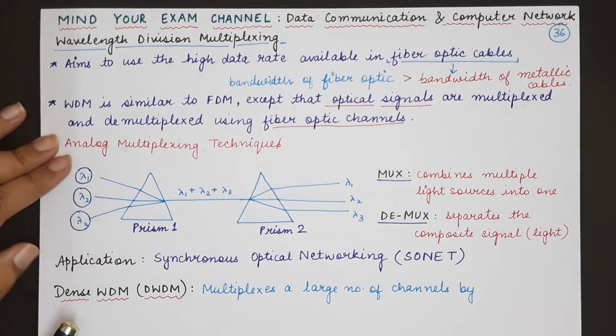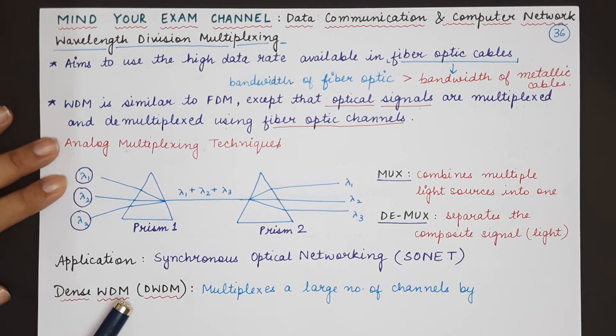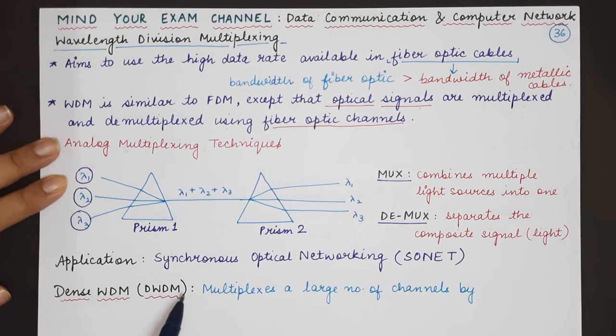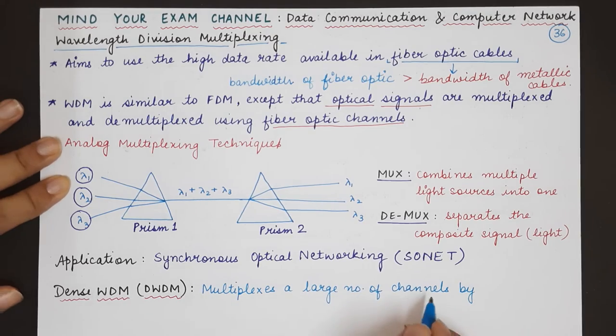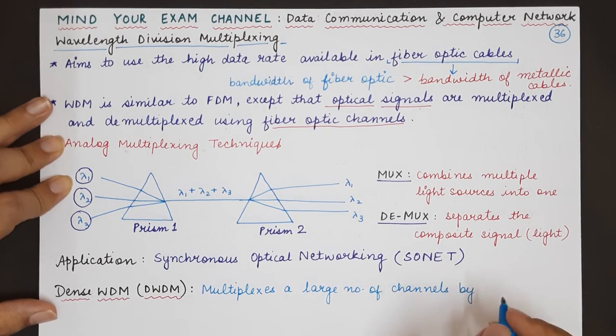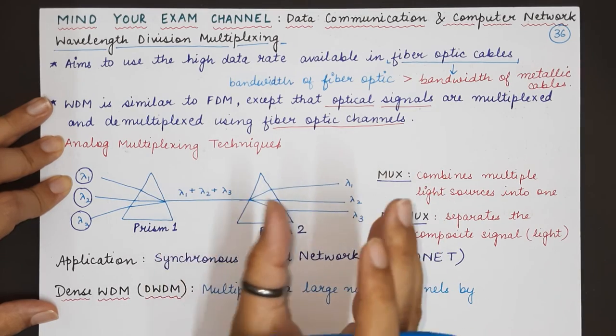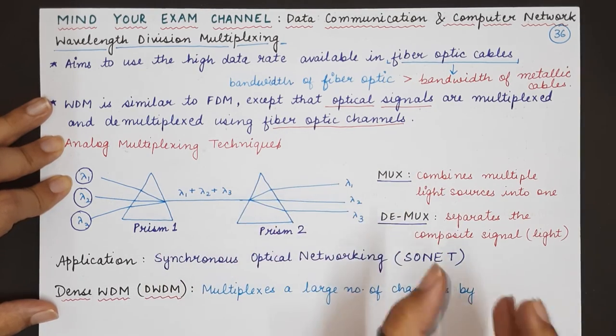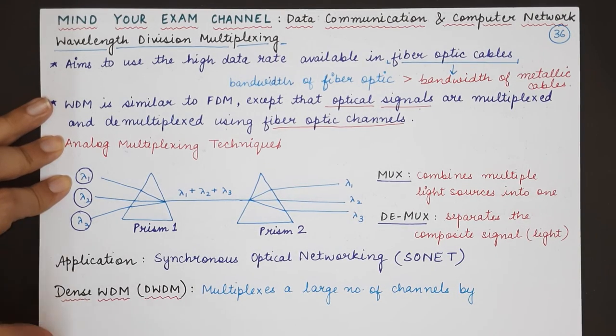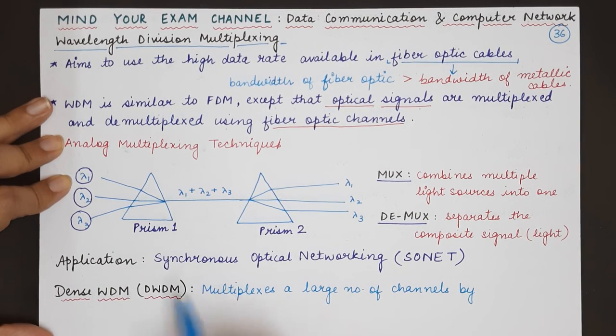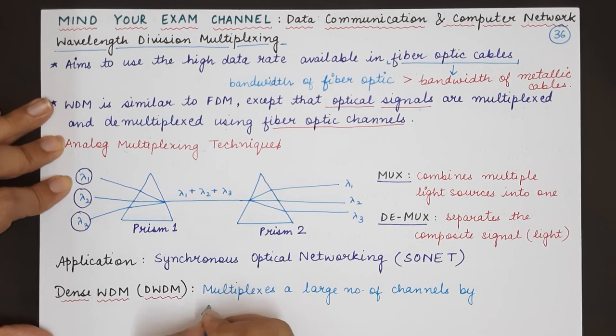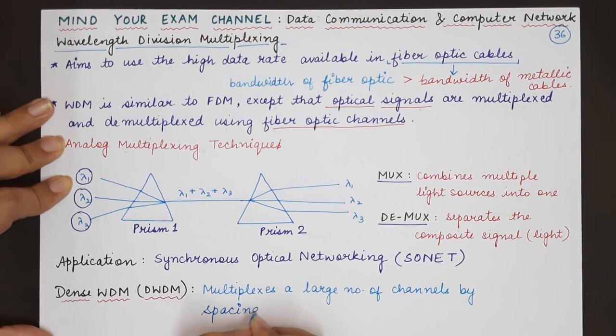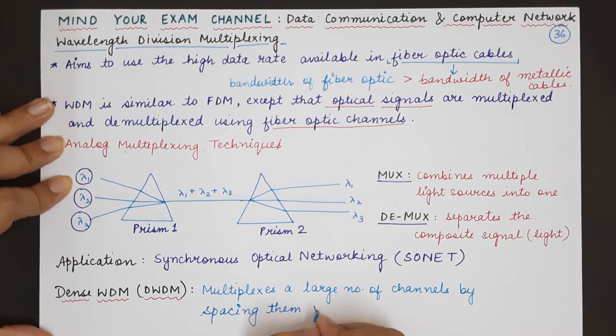Another thing that you must know here is that dense wavelength division multiplexing or DWDM is a variation of the original wavelength division multiplexing in which a large number of channels are multiplexed such that their closeness is very high and the gap between them is very low. So dense means high density. More number of things are present in the same space. So dense wavelength division multiplexing multiplexes a large number of channels by spacing them very close to each other.